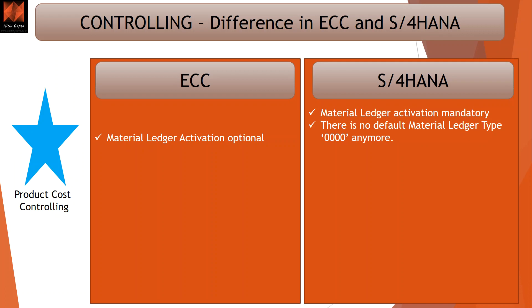Material ledger activation in ECC was optional — you could decide whether to activate it or not. However, in S4HANA it is mandatory. Whether you are migrating from ECC to S4HANA or doing a greenfield implementation, activating the material ledger is a required technical migration step. There is no more default material ledger type 0000 anymore. Whenever you are in a migration project, take care of this area carefully because it can cause complications, especially if there was no activation on the source ECC side when you plan to migrate into S4HANA.